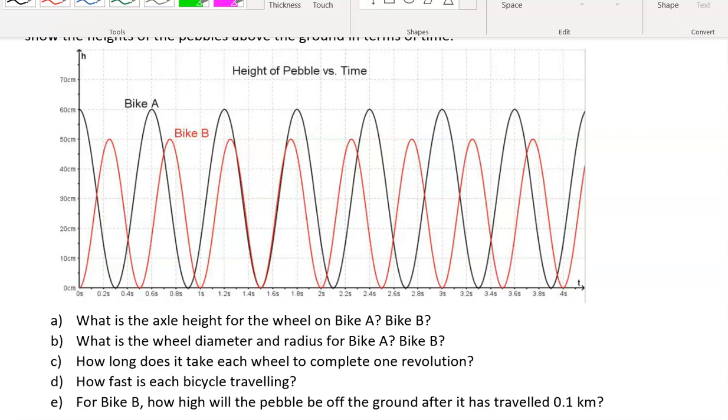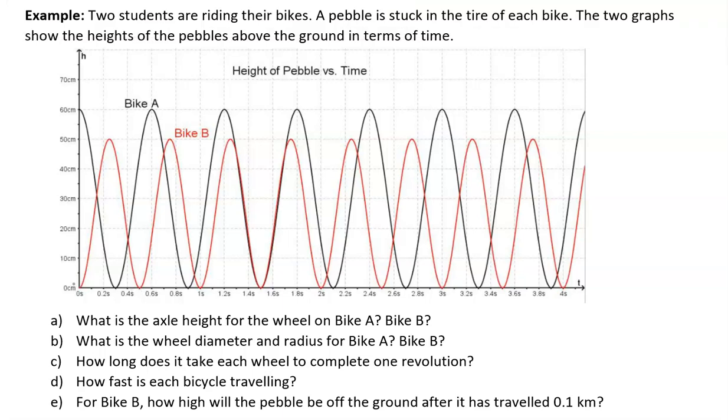And so, as you'll notice, the period of bike A is exactly 0.6 seconds, which is larger than the period of bike B at 0.5 seconds. And that might make you assume maybe they're not traveling the same speed. But let's actually analyze this and see what's really happening.